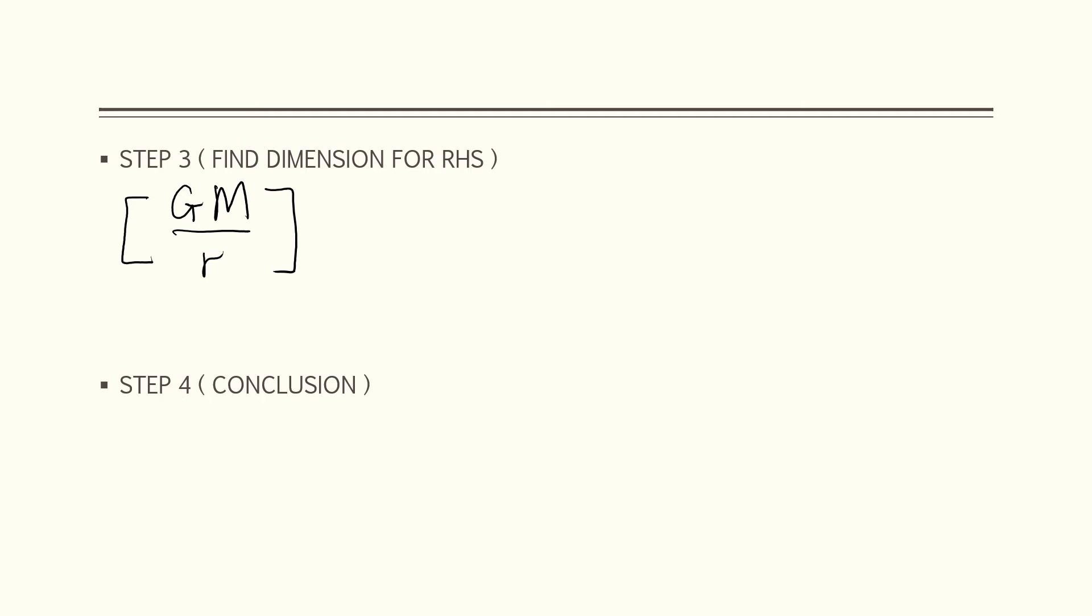For dimension for G, G is gravitational constant. The dimension for G is M to the negative 1 L cubed T to the negative 2.